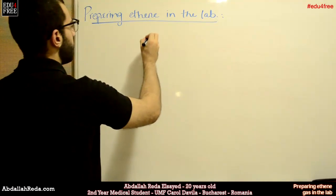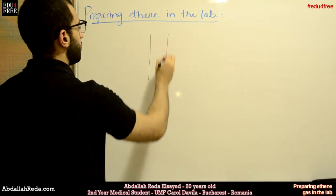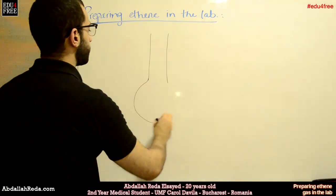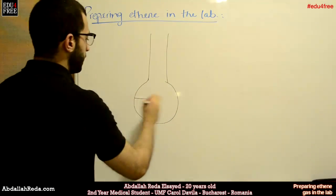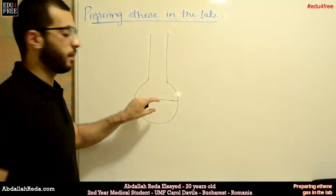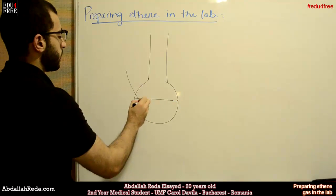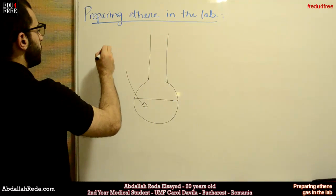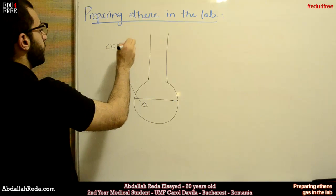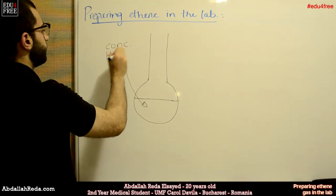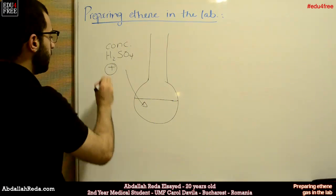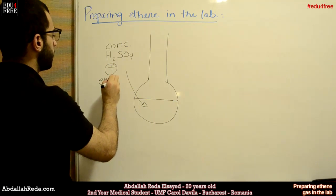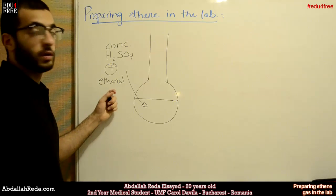First off, we need to have a flask like this. This flask will contain a mixture of liquids: concentrated sulfuric acid plus ethanol, which is an alcohol.